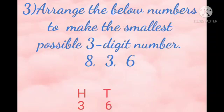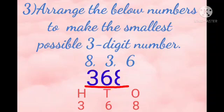So, in the hundreds place, we will write the smallest number, 3, then in the tens place, 6, and in the ones place, 8. So, the digit will be 368.